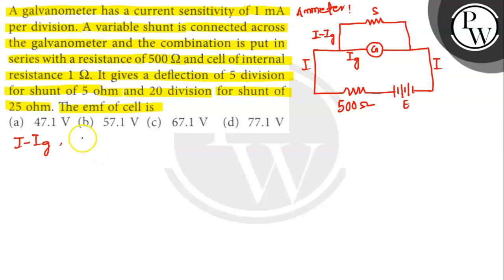Now we can write that RG into IG equals S into I minus IG. So that I equals IG into RG plus S divided by S, where RG is the resistance of the galvanometer and S is the resistance of the shunt.